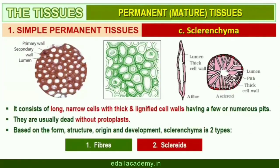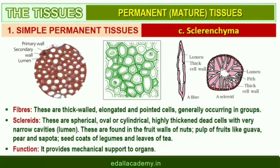Sclerenchyma consists of long, narrow cells with thick and lignified cell walls having a few or numerous pits. They are usually dead and without protoplasts. On the basis of variation in form, structure, origin, and development, sclerenchyma may be either fibers or sclerids. The fibers are thick-walled, elongated and pointed cells, generally occurring in groups in various parts of the plant.